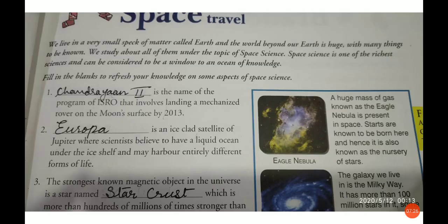The next topic is space travel. We live on a very small speck of matter called Earth, and the world beyond our Earth is huge. The universe is extremely vast with many things to be known, and we study all about them under the topic of space science. Space science is one of the richest sciences and can be considered a window to an ocean of knowledge. Fill in the blanks — I will give you the statement along with the answer. Chandrayaan 2 is the name of the ISRO program that involved the landing of a mechanized rover on the Moon's surface by 2013.